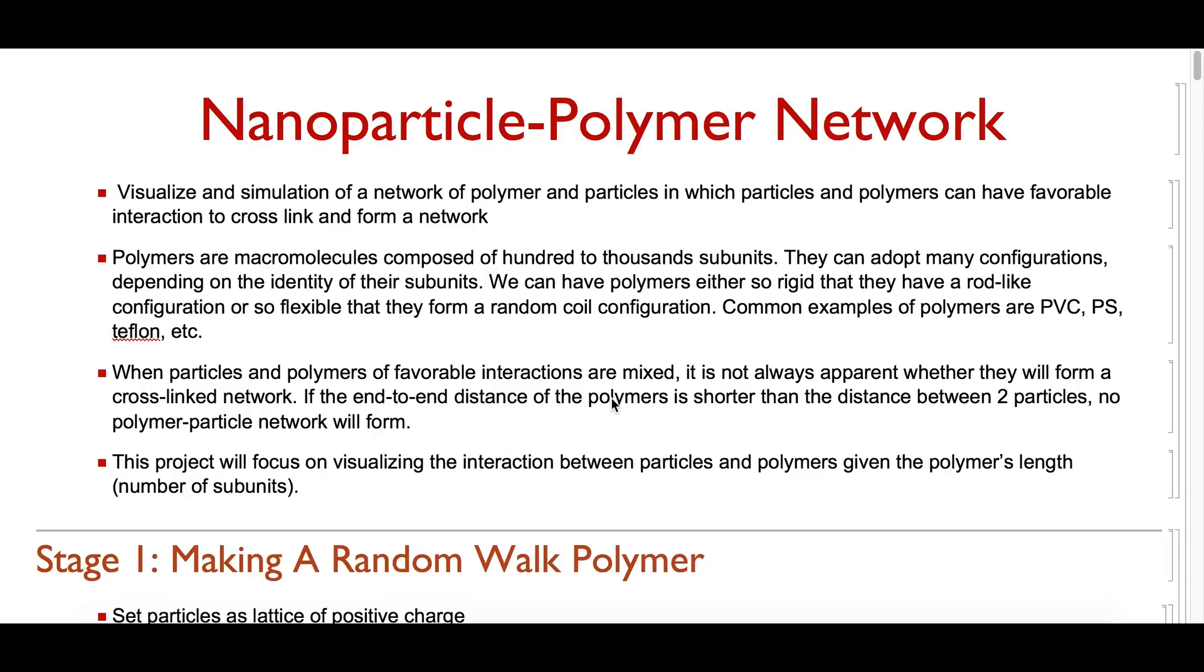Polymers are macromolecules composed of 100 to 1000 subunits. They can adopt many different configurations depending on the identity of their subunits. Common everyday examples of polymers are PVC, polystyrene, and teflon.